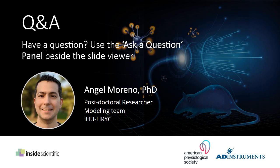Fantastic presentation, Angel. Now we move to Q&A starting with a few questions from registration. The first question: can you tell us about the natural frequency of action potentials in different cardiac cells, and which opsin is most suitable in terms of kinetics?